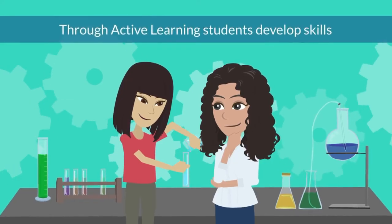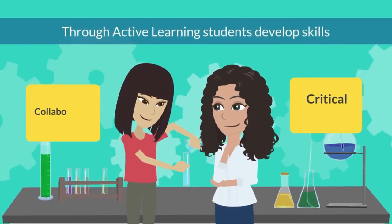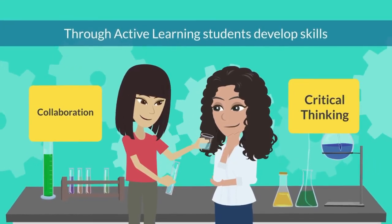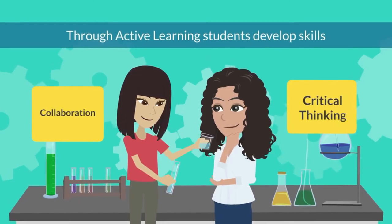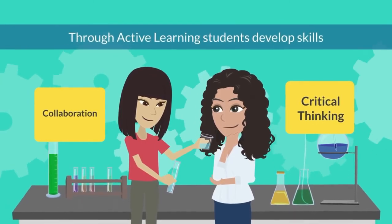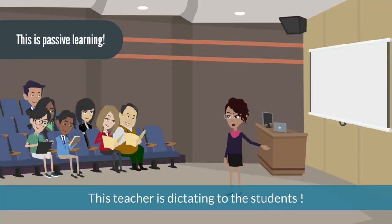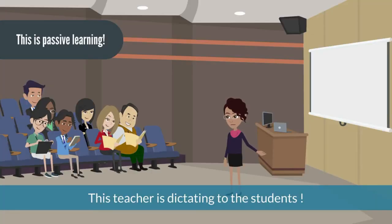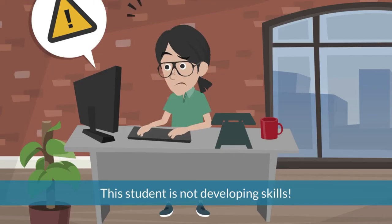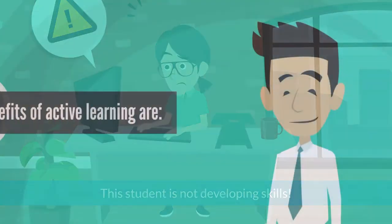As a result of active learning, students are able to develop skills such as critical thinking and collaboration. In contrast, passive learning occurs when a teacher dictates the learning. In other words, students receive information and memorize it, making it difficult for students to develop skills.